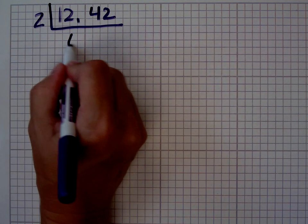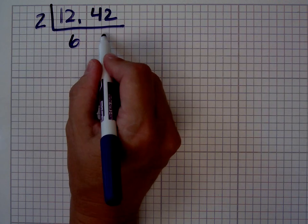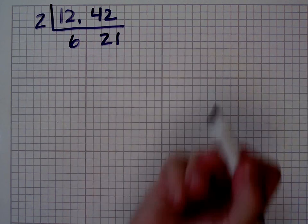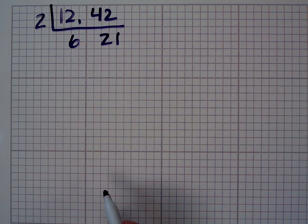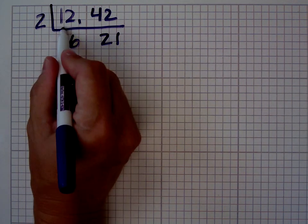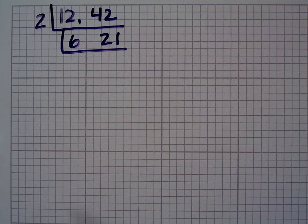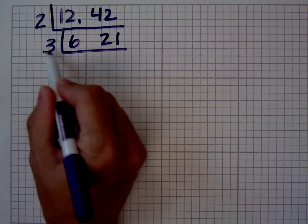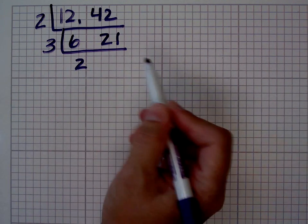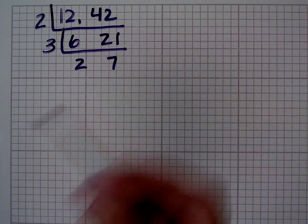I see both of those numbers are even, so I know I can take a two out. Twelve divided by two is six. Forty-two divided by two is twenty-one. Now I look at those numbers and I say, is there another prime number that I can take out? Well, because twenty-one is an odd number, I can't take a two out anymore, so I go up to three. Can I take a three out of both of them? Absolutely. Six divided by three is two. Twenty-one divided by three is seven.